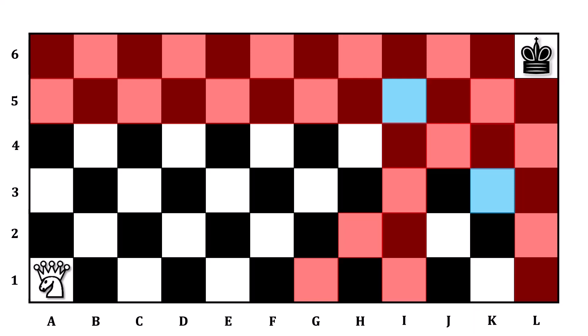But that's not the only way the Amazon can get to I5. There's also the diagonal that leads to it, and two spaces from which the Amazon can make a Knight jump over to I5.